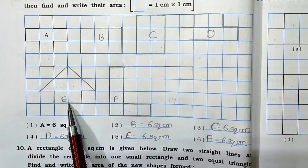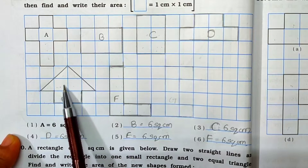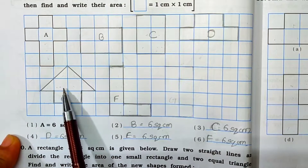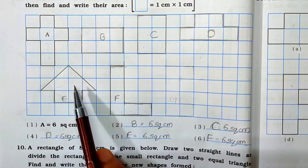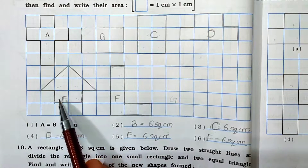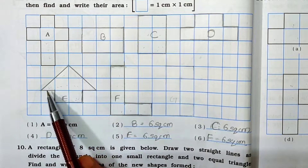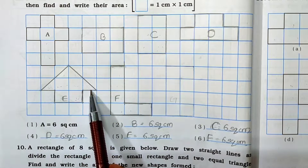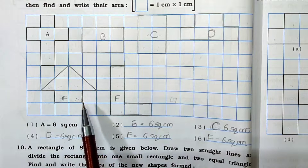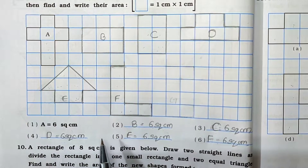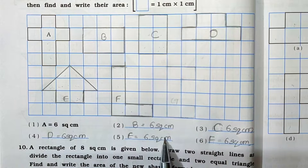Now see the 5th one, E. In that I have drawn an arrow shape. How many full squares does it have? 1, 2, 3, 4. This half and this half makes 5. And this half and this half makes 6. So total 6 square cm. E is equal to 6 square cm.